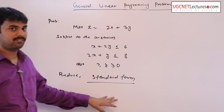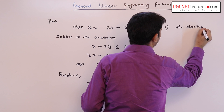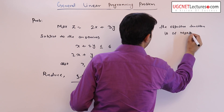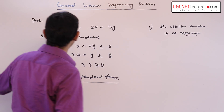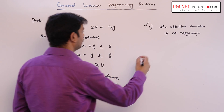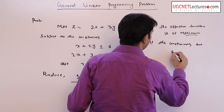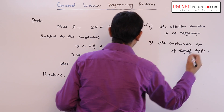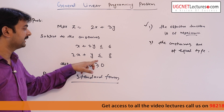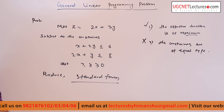As we know, the first criteria of standard form is that the objective function is of maximization type — here in the problem it is maximum, so the first criteria is satisfied. The second criteria is that the constraints are of equal type. Here x plus 2y is less than or equal to 6, and 2x plus y is less than or equal to 8, which means this criteria is not satisfied — this is not in standard form.